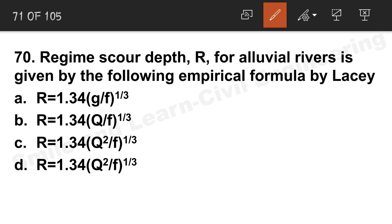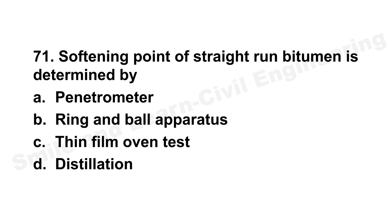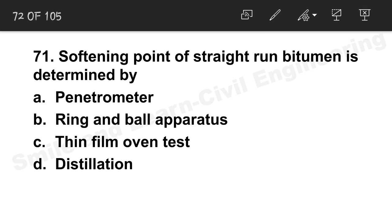Question 70: Regime scour depth for alluvial rivers is given by Lacey's regime theory formula. Option B is the correct answer: R = 1.34 × (qA)^(1/3).